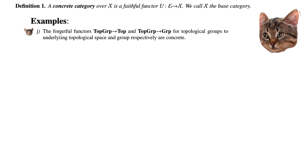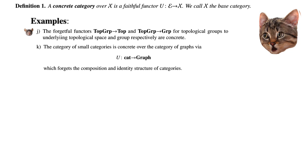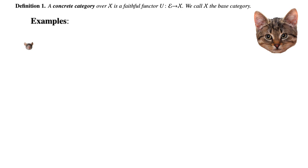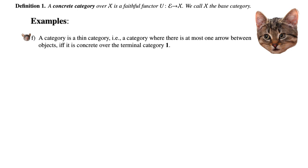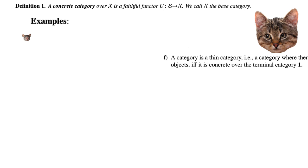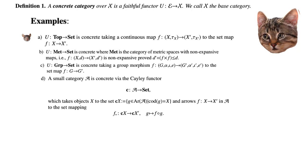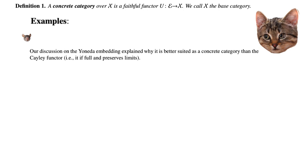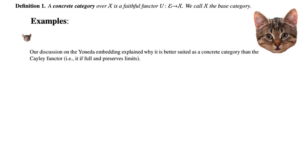We also have forgetful functors from topological groups to topological spaces and from topological groups to groups. Finally, small categories form a concrete category over the category of graphs, via the forgetful functor which forgets the composition and identity structure of categories. Example F shows that concrete categories are not necessarily injective on objects, since all objects go to the terminal category with one object. Examples A, B, C, and D also show that concrete categories are often not full; when they are full, they are called embeddings.